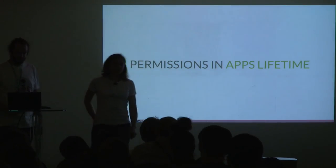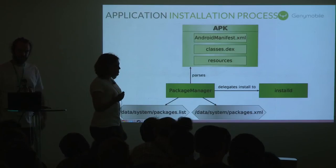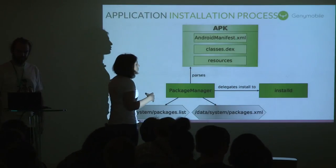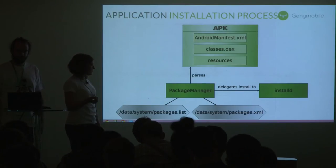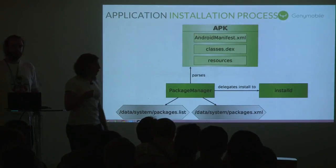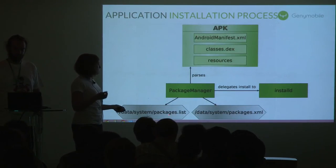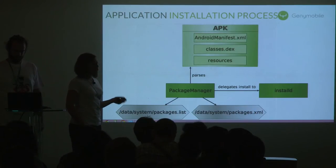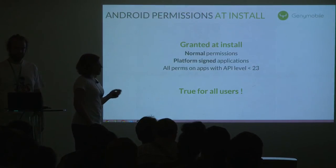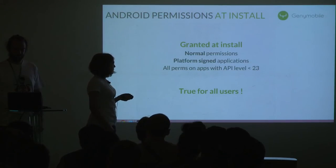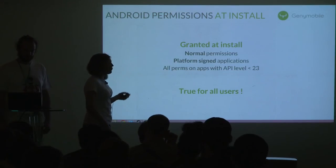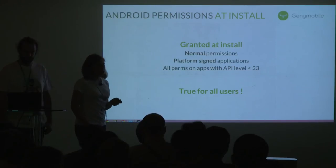When installing an APK, the package manager is triggered. The first thing it does is parse the AndroidManifest XML, retrieve permission information, and store it in two files: data/system/packages.list and packages.xml. The rest of the process is delegated to a native daemon called installd. All normal and signature permissions are granted at install time — in Marshmallow and all other Android versions. Importantly, for any users on the device, these permissions will be granted for all users.